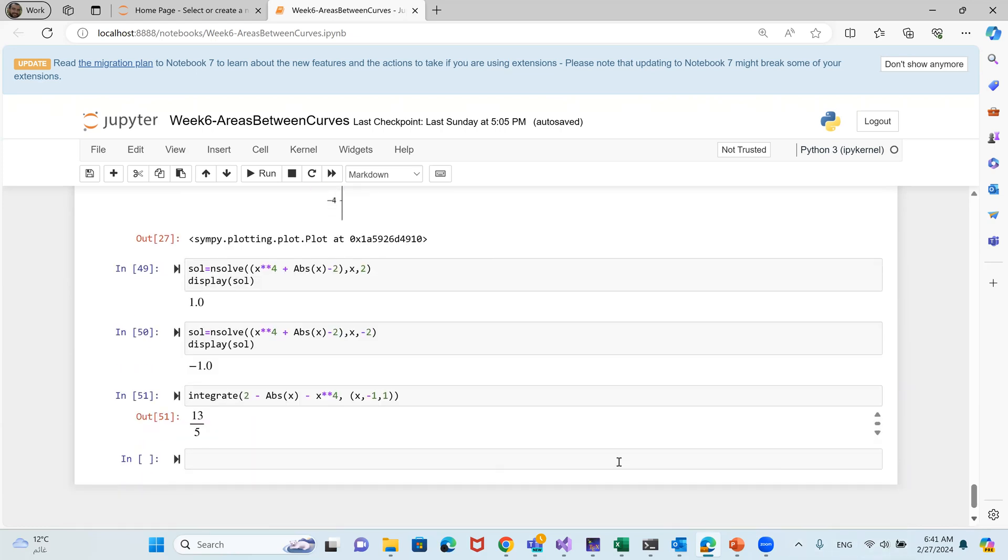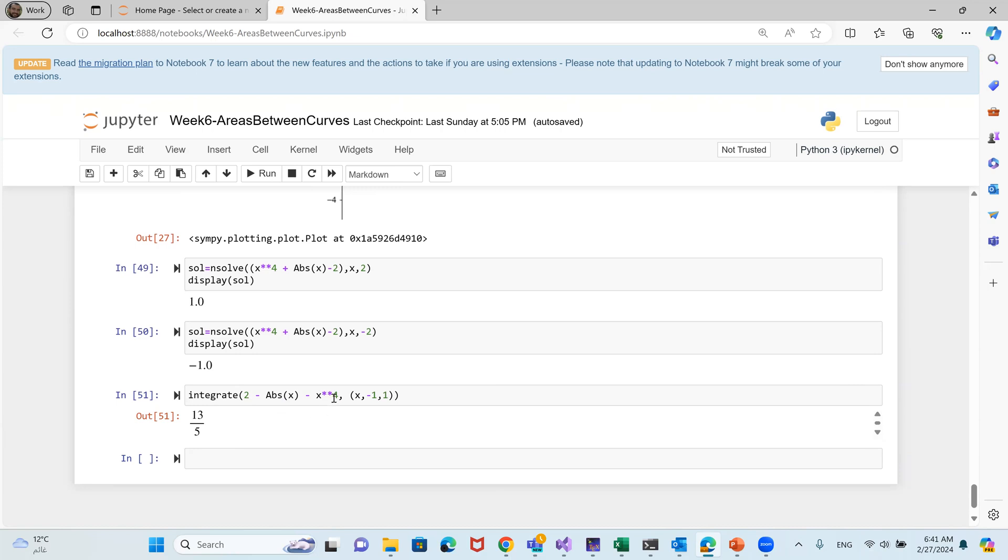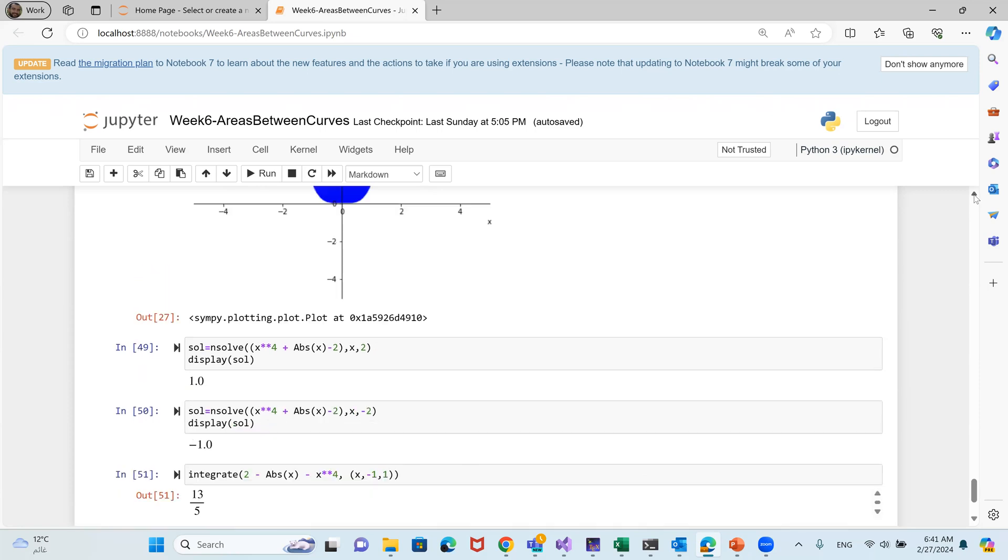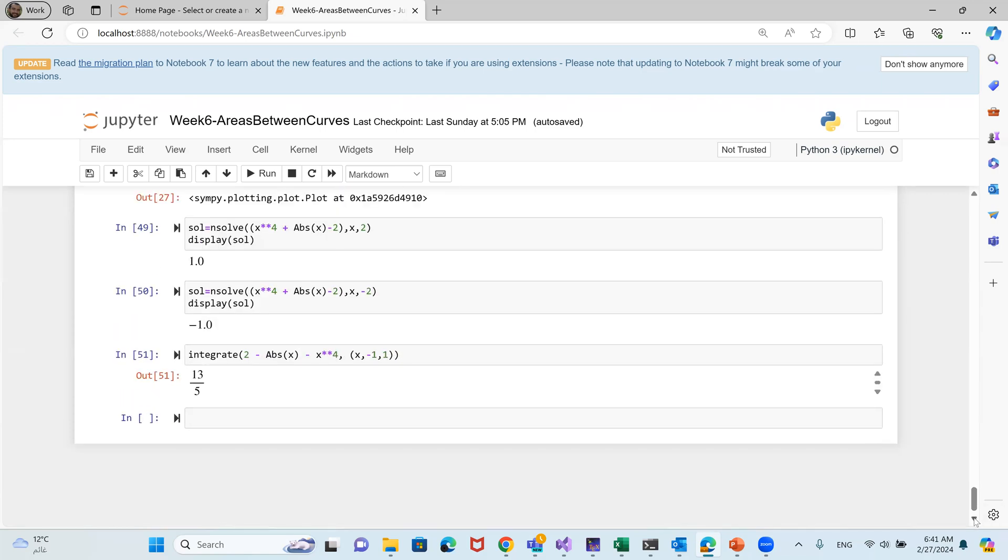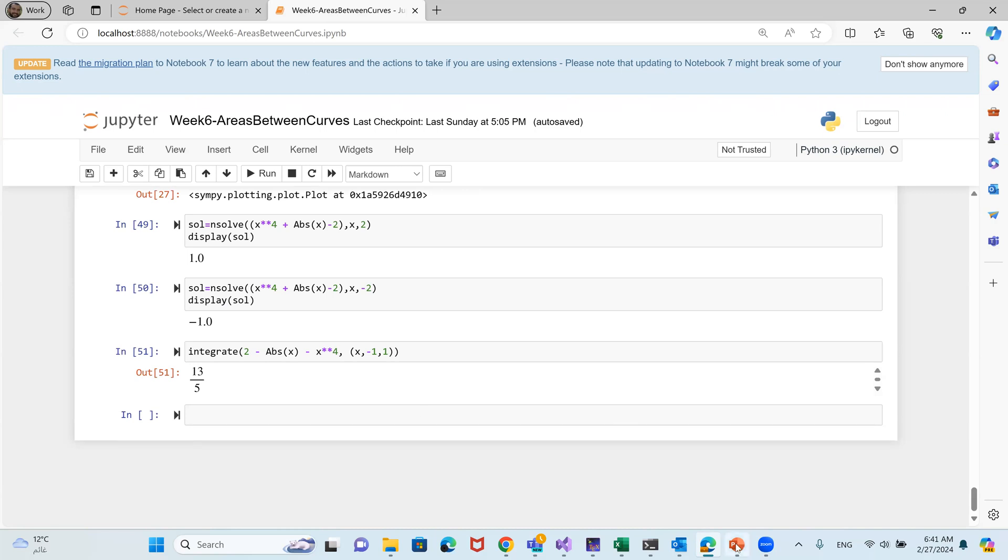Then our integral will be f2 minus f1. So 2 minus absolute value of x minus x to the power 4. And x will go from minus 1 to 1. It means that in our graph here, we go from this point to this point. Here we go. The result of the integration will be here, 13 over 5. That was the video for everyone.